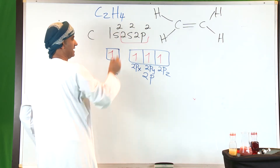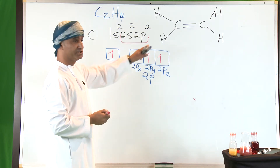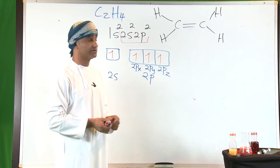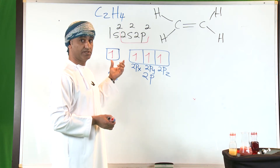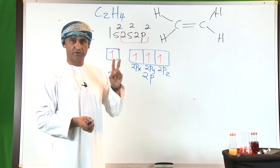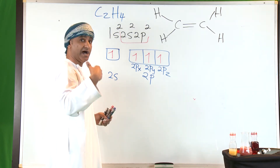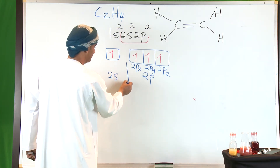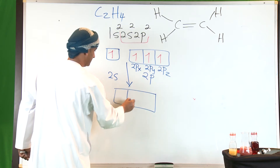Because there are three effective electron pairs around carbon in ethylene, not all of these orbitals will mix — only three of them. In that case, the 2s orbital should mix with only two 2p orbitals to get three brand new orbitals, three hybrid orbitals, which would be called sp² hybrid orbitals.